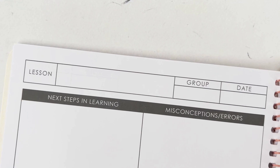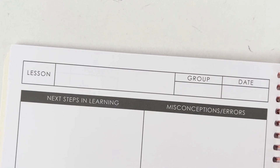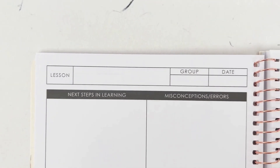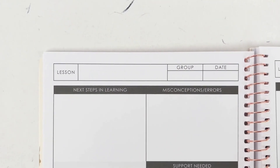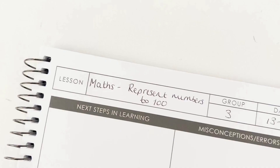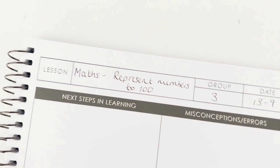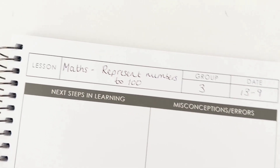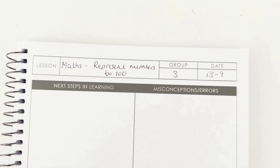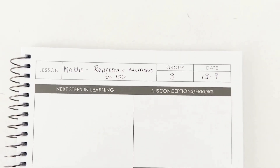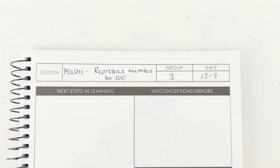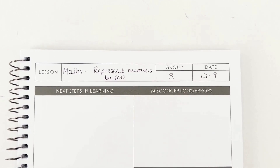The top of the template includes space to record the lesson or the lesson focus, which group has been taught, and the date. As an experienced primary school teacher, I'm going to be going through this template as a Year 3 primary school teacher at the beginning of the year, teaching place value in maths, and how I would use this template to give effective feedback.